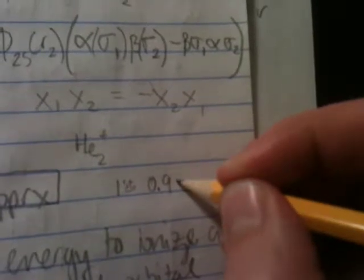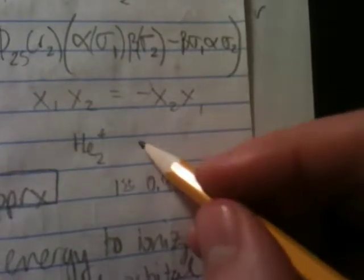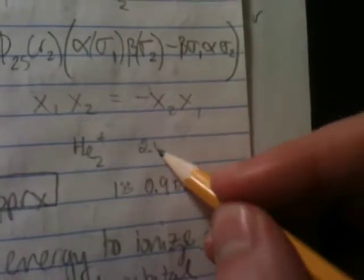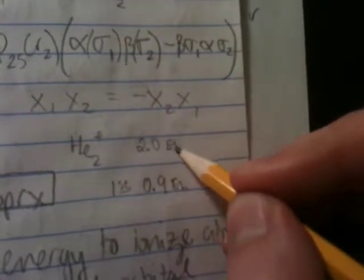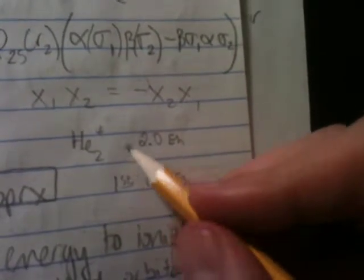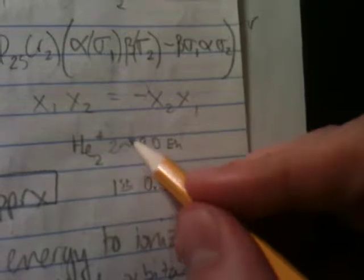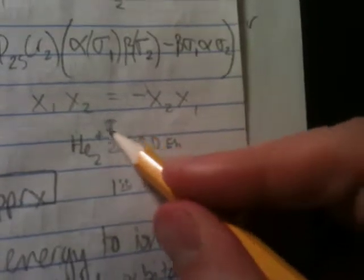First ionization of helium, energy of helium, 0.9 Hartrees. And your second one is about 2.0, about 2 Hartrees. These are your ionization energies.